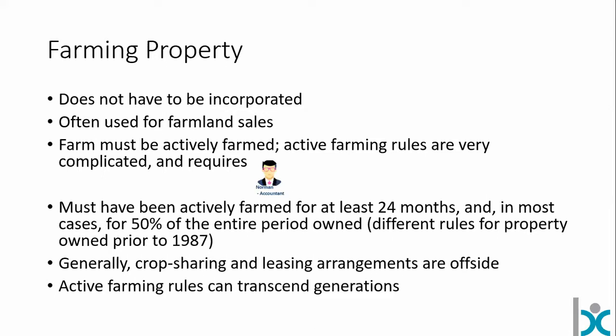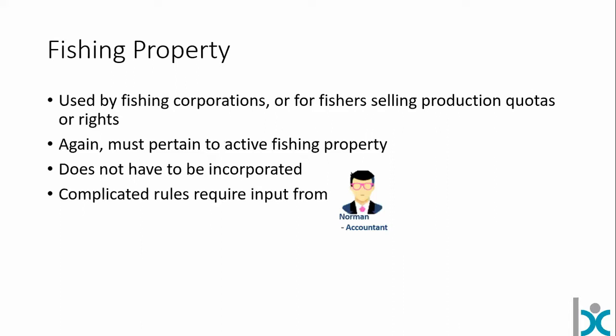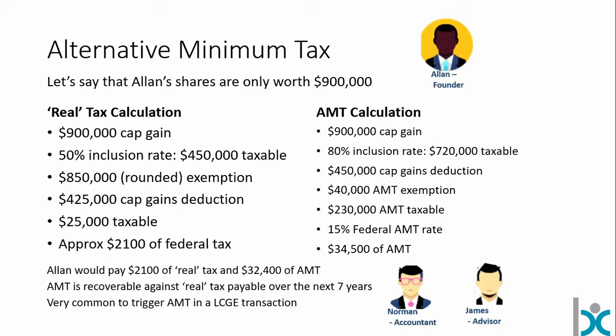Fishing property is typically a little less complicated — usually dealing with production quotas or rights. Sometimes you might have a big successful fishing corporation, but generally it's quotas or rights being sold. Again, it must be active fishing property, and again it doesn't have to be incorporated. You'd want to lean heavily on the accountant here. Now let's look at some traps that arise when using the capital gains exemption. A very common one deals with the alternative minimum tax.